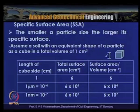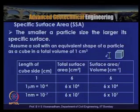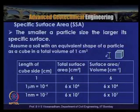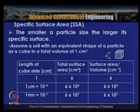If we reduce the particle size to 1 micrometer (10⁻⁴ cm), the total surface area works out to 6×10⁴ cm² and the surface area per volume is 6×10⁴. If cut further to 1 nanometer (10⁻⁷ cm), the total surface area becomes 6×10⁷ cm², with surface area per volume of 6×10⁷ cm⁻¹.